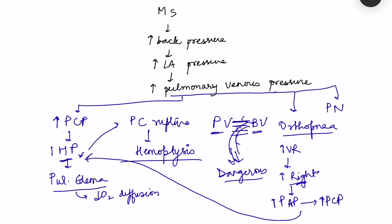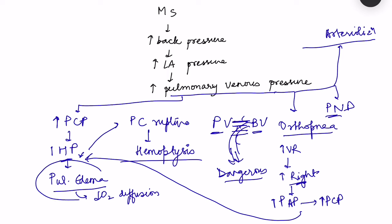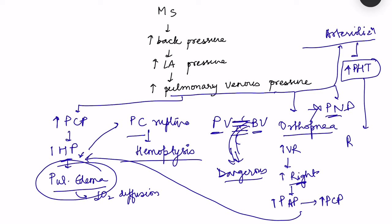For the same reason we get paroxysmal nocturnal dyspnea as venous return increases. Over time there will be arterialization of pulmonary vessels — thickening of the walls of capillaries and veins so they become like arterioles. Once that happens, fluid cannot ooze out of these capillaries as the endothelial gaps close, so pulmonary edema and PND may no longer occur. However, this leads to increased pulmonary artery hypertension.